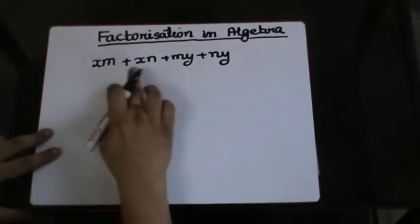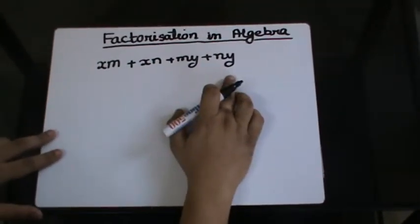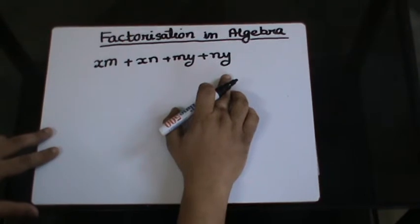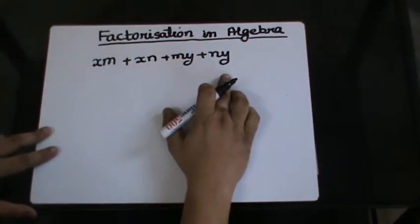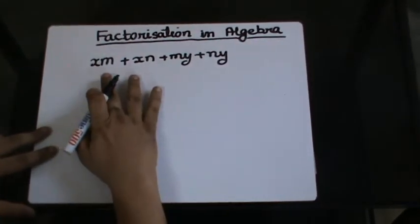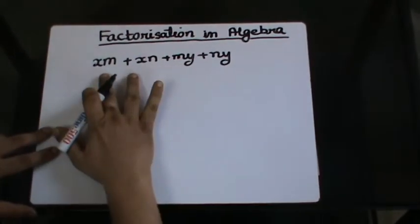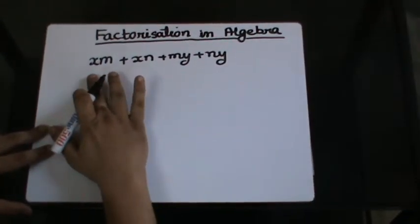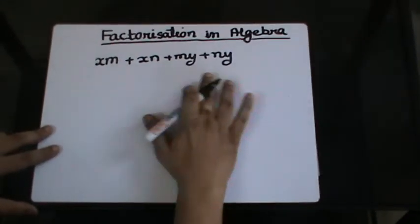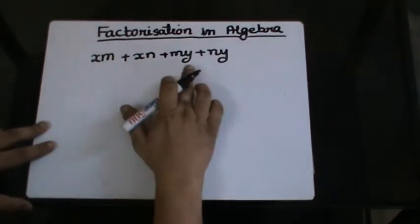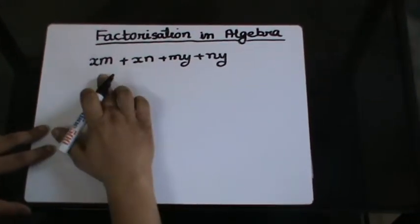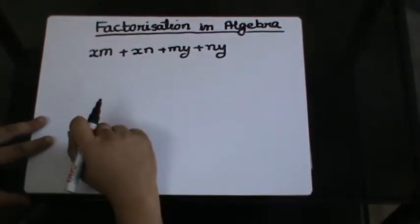Now, if you look at all the four terms together, there is no element which is common in all the four. x is common in these two, but it is not here. And y is of course in these two, but it is not present here. So I have no element which can be common in all the four. And this gives me an indication that Type 1 factorization is not possible.